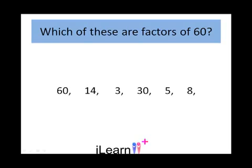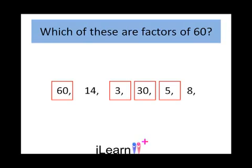Which of these are factors of 60? Look at the numbers in the row. Which of those are factors of 60? 60, 3, 30, and 5. They are all factors of 60 because they can be multiplied by another number to make 60.